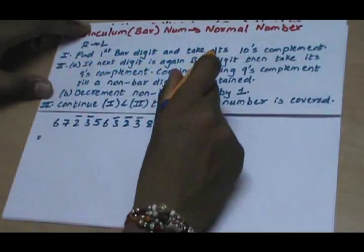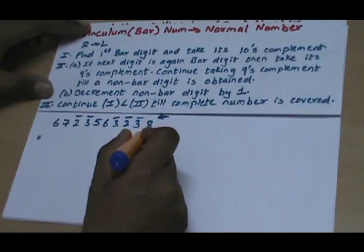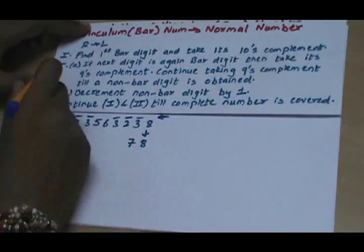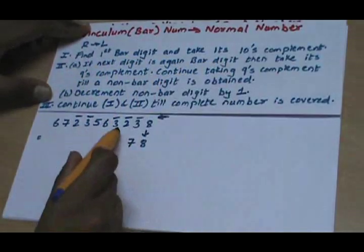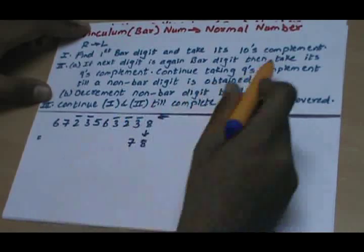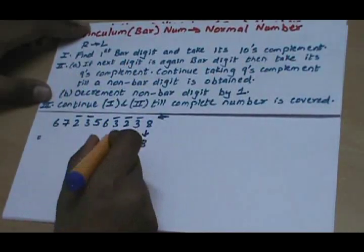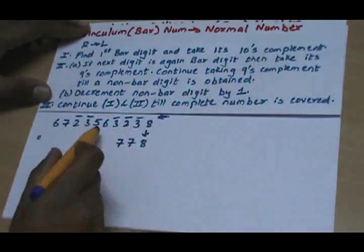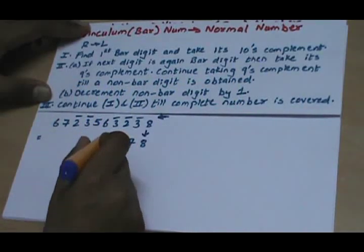Step 1: Find the first bar digit and take its tens complement. Here the first bar digit is 3̄, so 8 is written as it is, and the tens complement of 3 is 7. Step 2: If the next digit is again a bar digit, take its 9s complement. The 9s complement of 2 is 7. Continue taking 9s complements for consecutive bar digits — the 9s complement of the next bar digit gives 6.